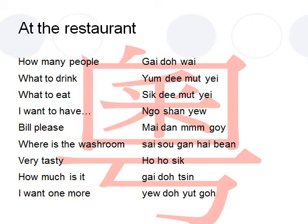Now if they are asking you this, you would want to start the conversation by saying I want to have. In Cantonese, I want to have is 我想要. 我 is I or me, 想 means want, and 要 means have. So I want to have in Cantonese is 我想要.